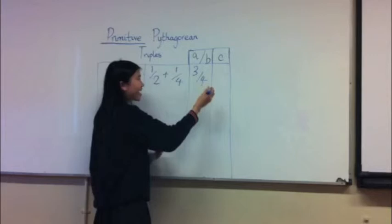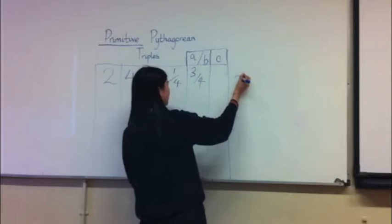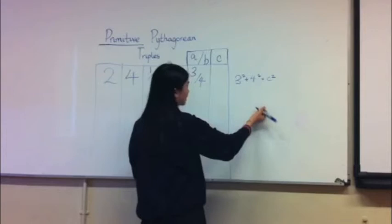This constitutes for a and b, so a equals 3 and b equals 4. Then you'll have 3 squared plus 4 squared equals c squared, and so c squared is going to equal 25, and c is going to equal 5.